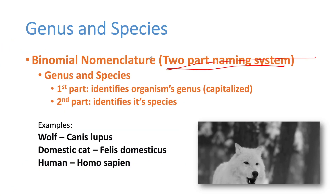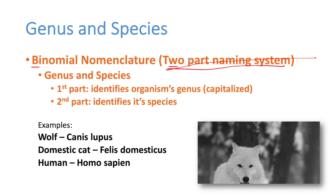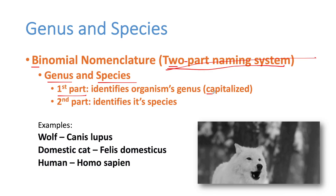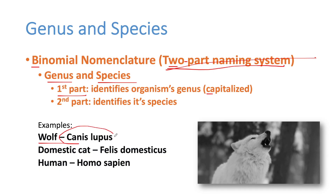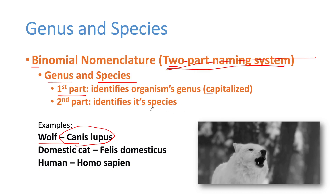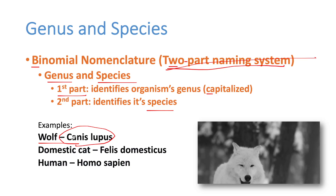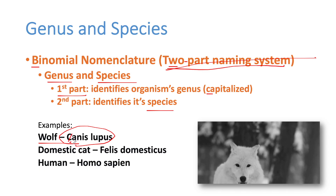Remember, the prefix 'bi' means two, so binomial nomenclature means this is a two-part naming system: genus and species. Genus always comes first and it's going to be capitalized — I'm going to let you know right now there's going to be a quiz question. For example, if I look at this wolf, this is the binomial nomenclature for a wolf: Canis lupus. 'Canis' sounds like canine, right? The species of wolves is lupus, the genus is Canis. There will be a quiz question asking which of the following is the correct binomial nomenclature — all answers will look the same, but capitalization will differ.